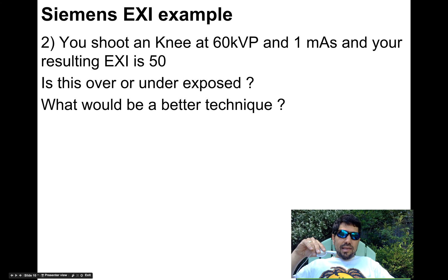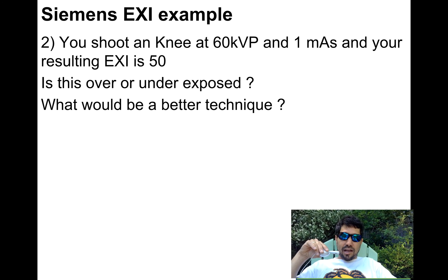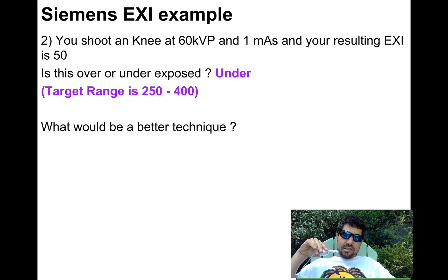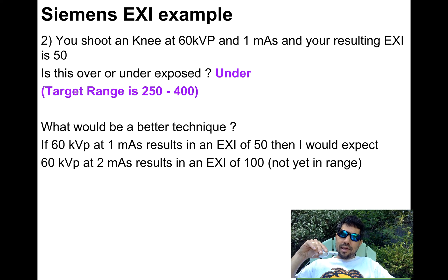If you shot a knee at 60 kVp and 1 mAs, and your resulting EXI was 50 on your Siemens system — that's an EXI value — would it be over or under? It's under. Our target range is 250 to 400, and we know it's proportional. So for a better technique: 1 mAs gave me 50. Two mAs would give me an EXI of 100. Is that in my range? No, I'd have to keep going — not yet in range.